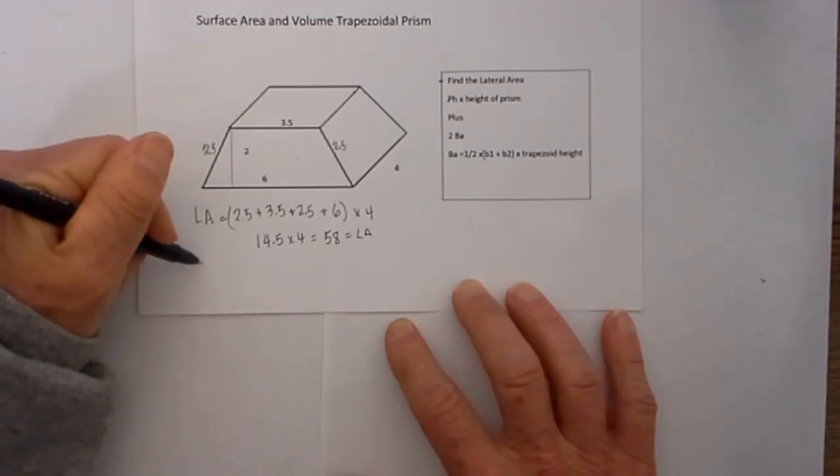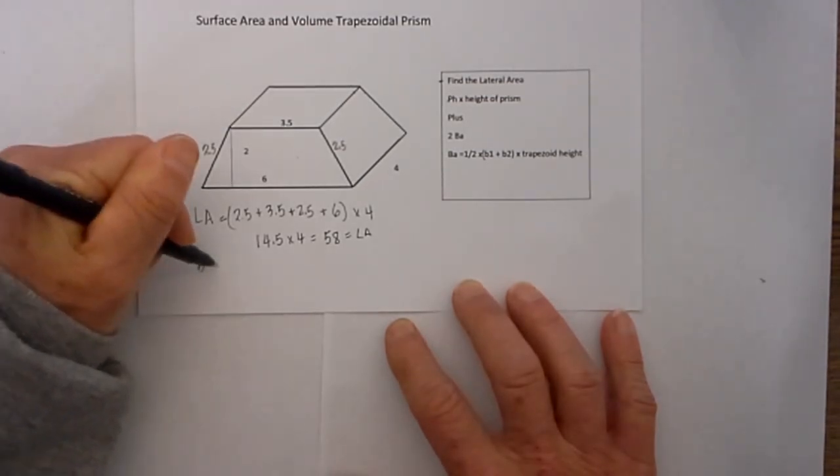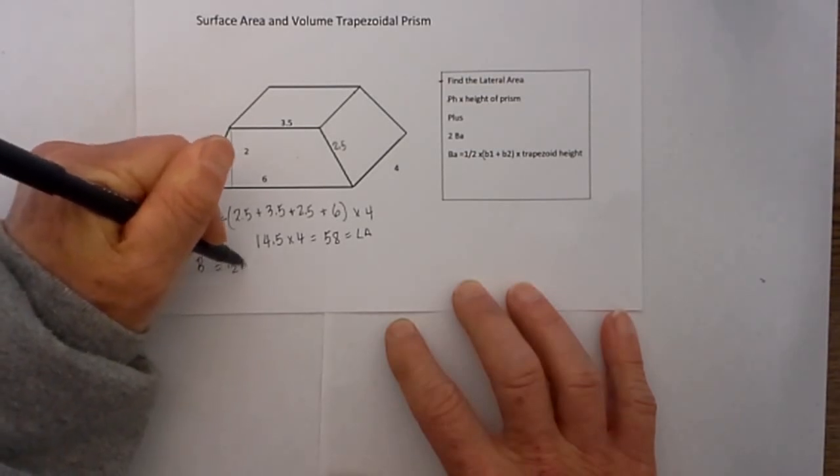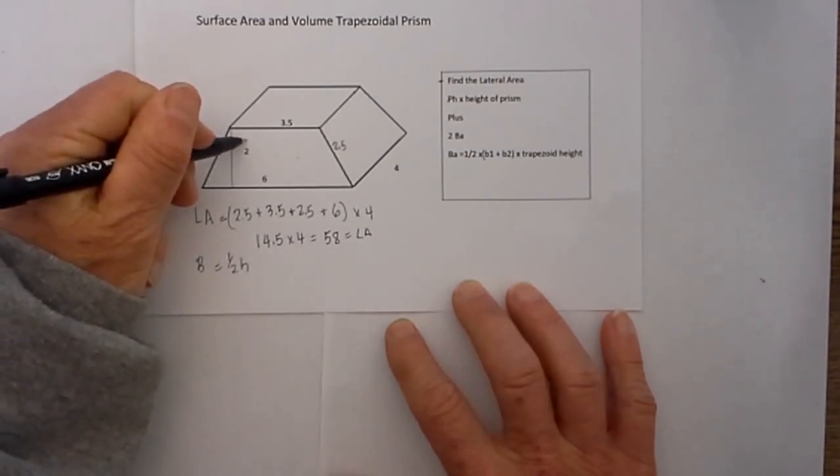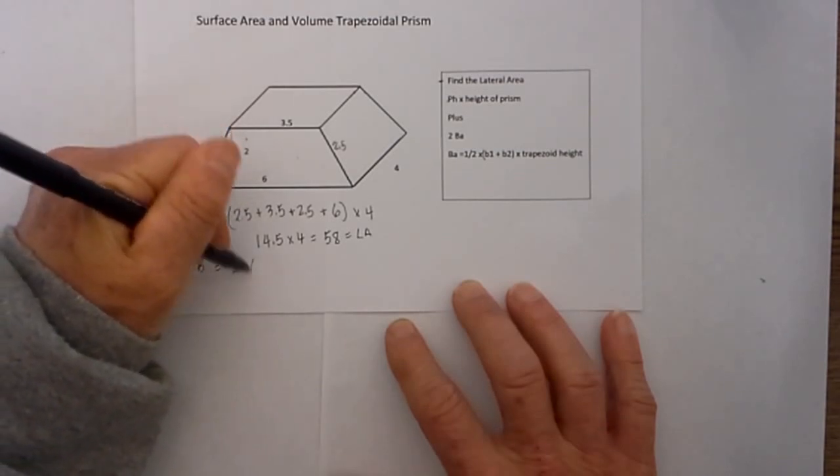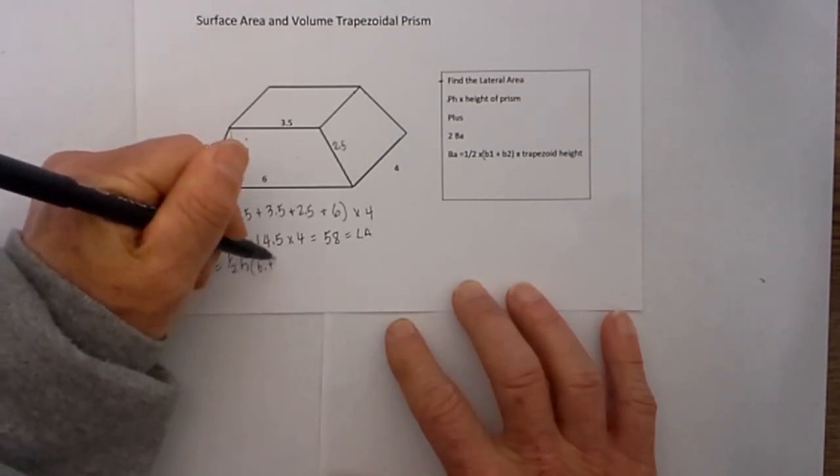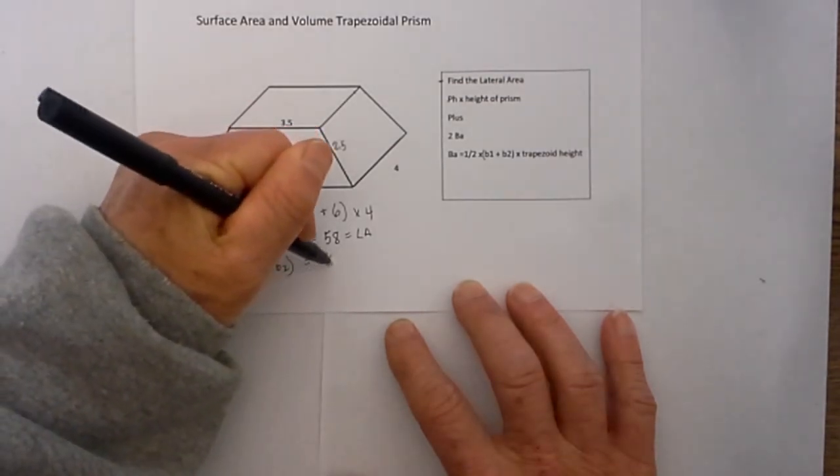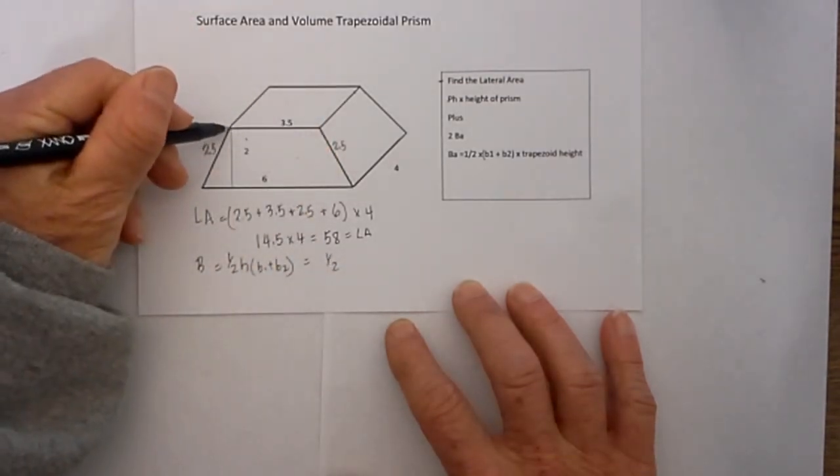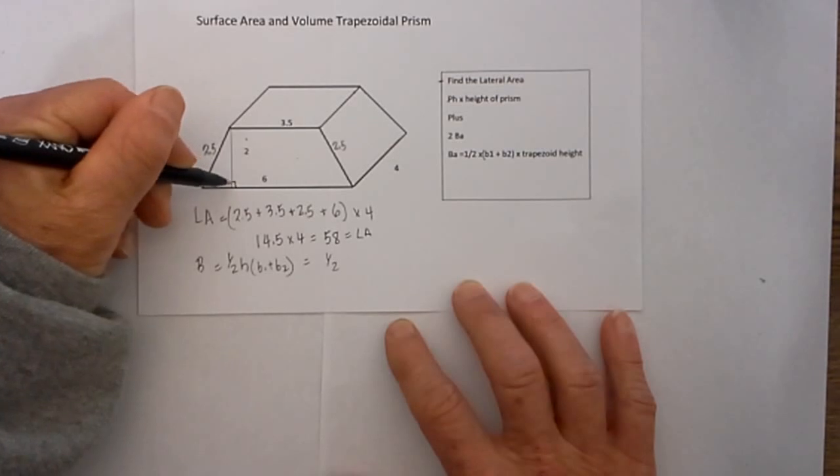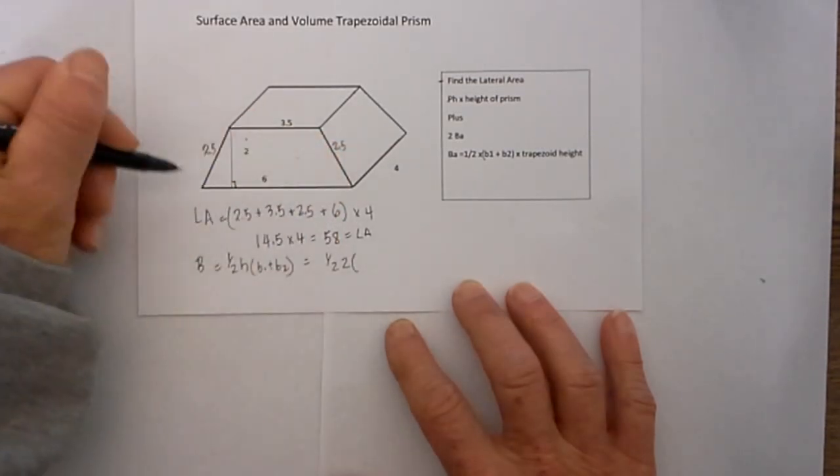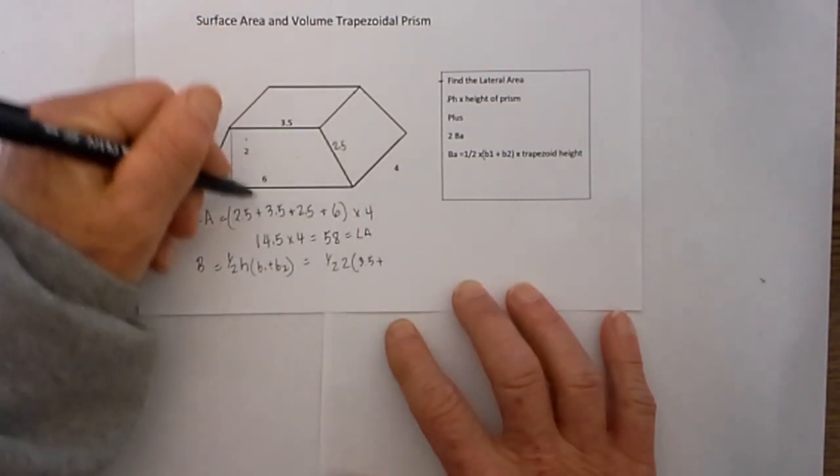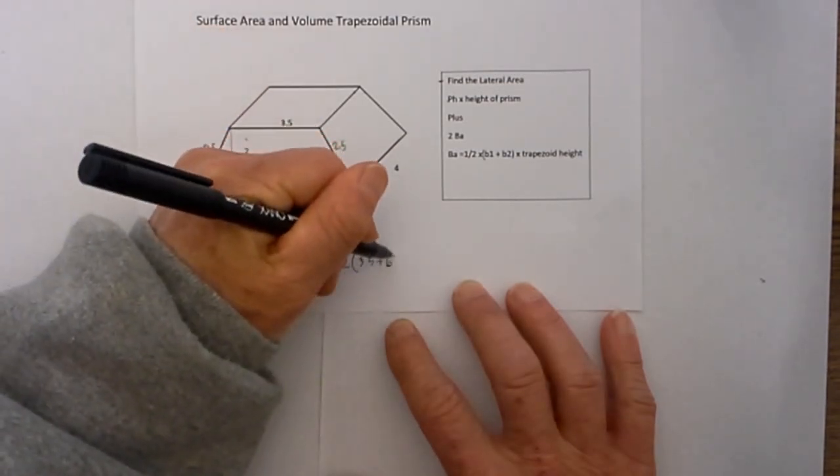Now we need to find the area of the bases and that is equal to the formula 1 half times the height of the actual trapezoid which is the trapezoid base times base 1 plus base 2. So now I will fill in the numbers. We have 1 half the height and that is given. That is the perpendicular line and we talked about that when we were finding volume. That is 2 times base 1 which is 3.5 plus base 2 because you know the trapezoid the two bases are different lengths.